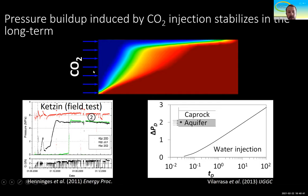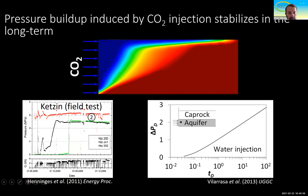Because of the low viscosity of CO2, it can flow very easily inside the storage formation. As a result, unless we have a low-permeability fault creating a barrier to flow, what we observe is a constant or near-constant pressure with time, which facilitates pressure control. This is unlike what we observe when we inject water, where pressure increases linearly with the logarithm of time. So CO2 injection facilitates pressure management.